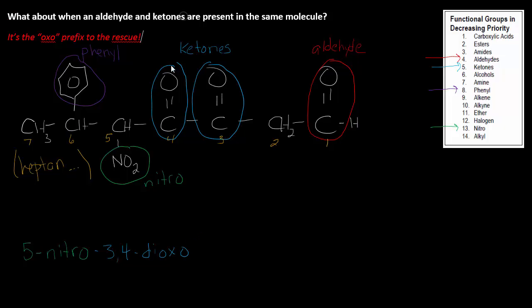Then O in terms of alphabetical order, then P. 6-phenyl, heptan, and because there's only single bonds between the carbons, AL for the aldehyde.